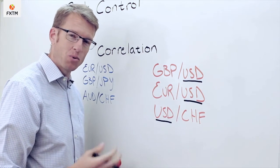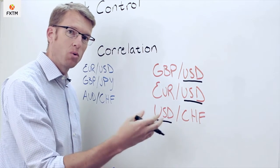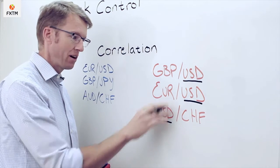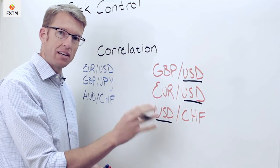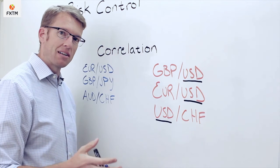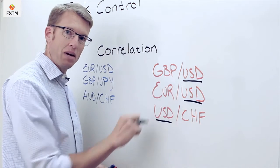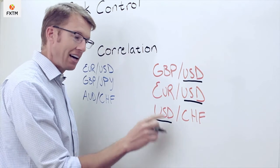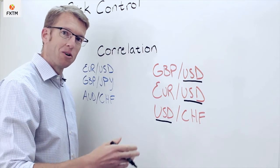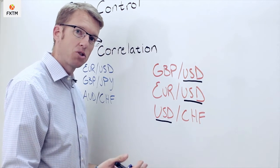Let's say this trader is long the pound, long the euro, and short the franc. If something happens that directly affects the value of the dollar, each one of these trades will either all go well or all go bad. For example, if something particularly positive happened to the dollar, both the pound and euro pairs would likely move against them to the downside, and the swissy position would go up — so they would lose on all three positions.